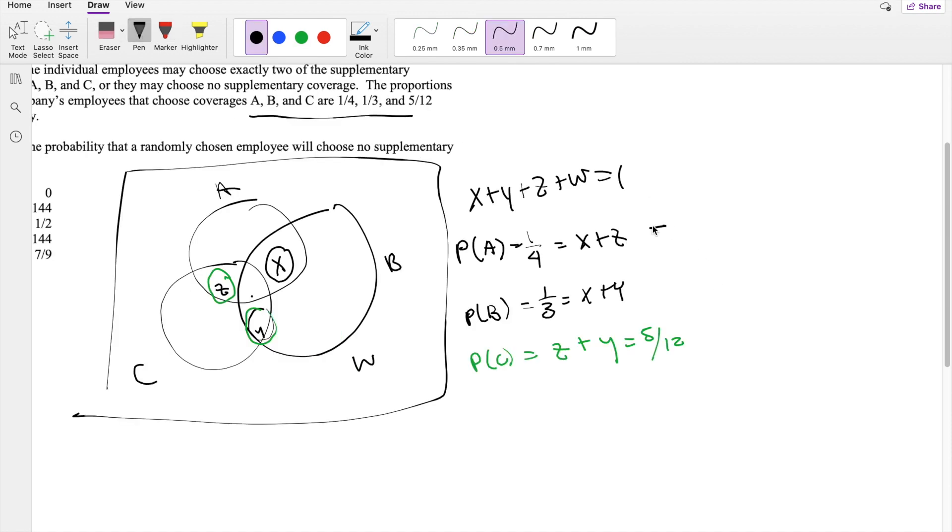So I can actually solve this problem in terms of Z. So then Z is equal to one-fourth minus X. And I'm going to solve this one in terms of Y. So Y equals one-third minus X. I'm actually going to plug Z in here for this Z right here. So this is going to be equal to one-fourth minus X plus Y equals one-third minus X, and that's equal to five-twelfths.